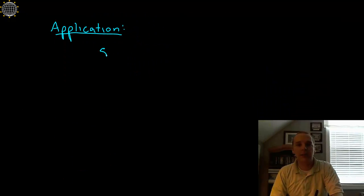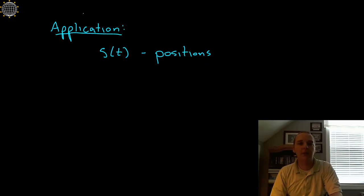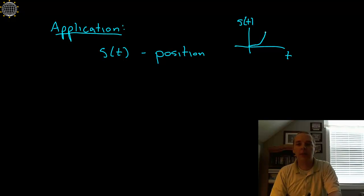But I'll give you just one application to help you understand this. Let's say we had a function s of t that represents the position of an object. If you draw it on a graph — s of t compared with time — this would be like something's position in space.